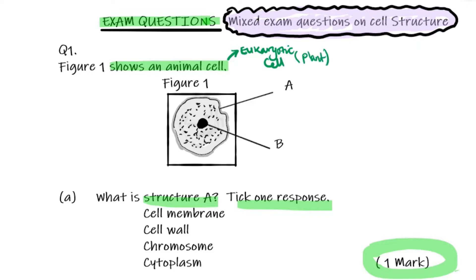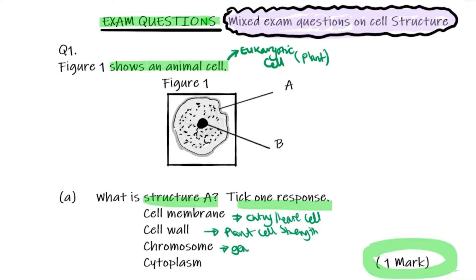A membrane is to do with substances entering and leaving the cell. Cell wall is to do with a plant cell and provides strength. Chromosomes are to do with the genetic material and are in the nucleus. Cytoplasm is where chemical reactions happen.